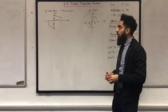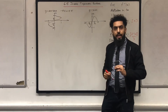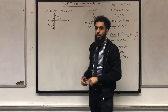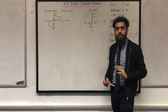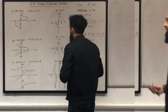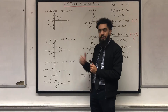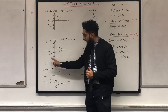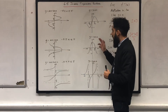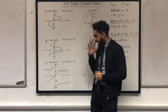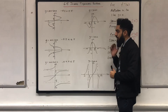I want you all to sketch y equals arccos x in this particular interval and y equals arctan x in this particular interval. Once you've done that, I will be putting up both graphs on the board so you can check your work. Everyone should have something that looks like this for y equals arccos x, and something like this for y equals arctan x. These graphs come from y equals cos x and y equals tan x respectively, by flipping the domain and range.